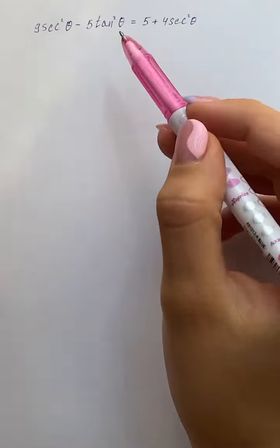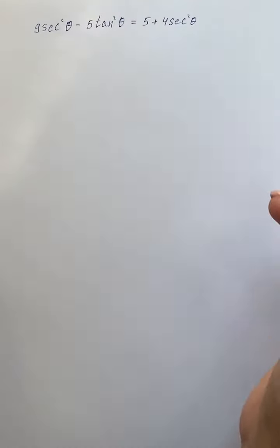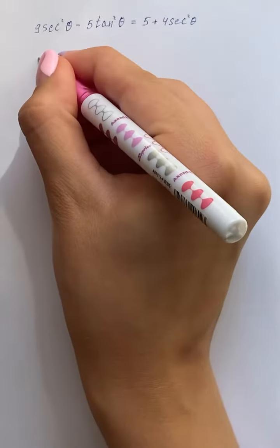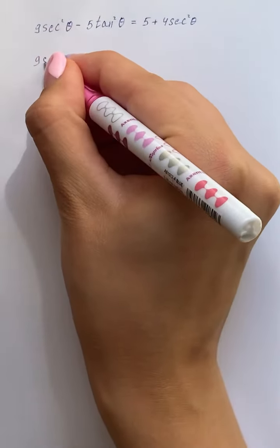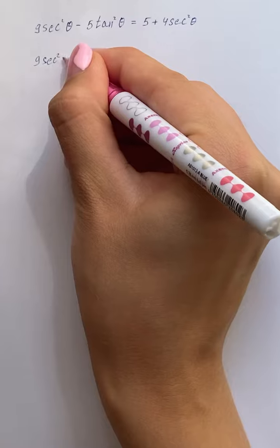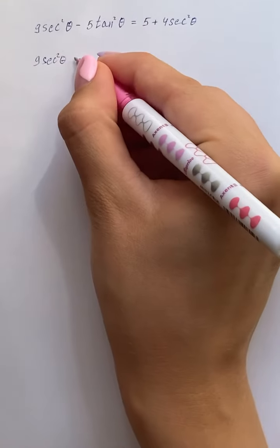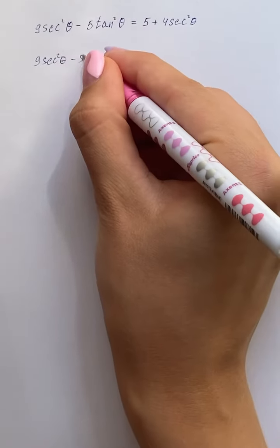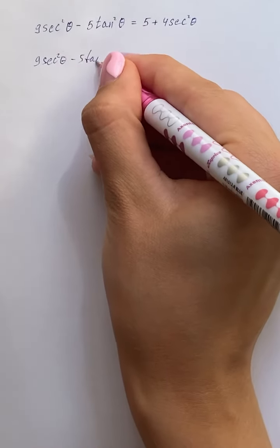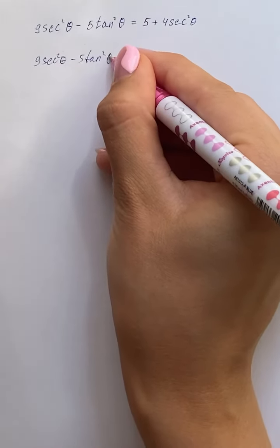We're going to work with the left-hand side, that's 9 secant squared theta minus 5 tangent squared theta.